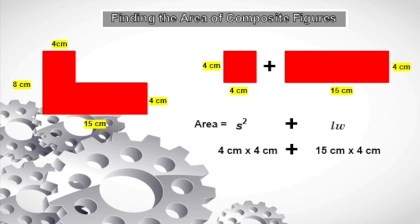The area of the square is 4 centimeters times 4 centimeters, which equals 16 centimeters squared. The area of the rectangle is 15 centimeters times 4 centimeters, which equals 60 centimeters squared. To get the area of this figure, we add the two: 16 centimeters squared plus 60 centimeters squared equals 76 centimeters squared. Therefore, the area of this figure is 76 centimeters squared.